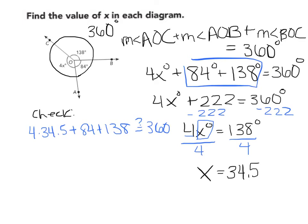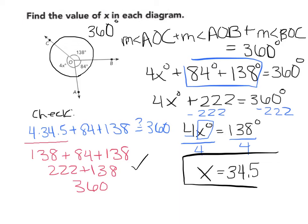4 times 34.5 will give me 138 plus 84 gives me 222. 222 plus 138 gives you 360 degrees. So our check works, and we know that our answer is correct.